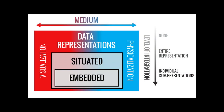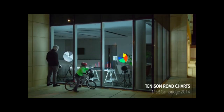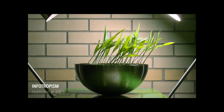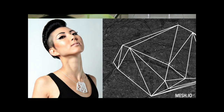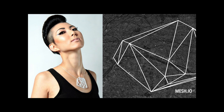There are also a number of examples of situated physicalizations. The Tennyson Road charts created by folks at MSR Cambridge use physical charts on a city street to show poll responses from residents in that neighborhood. David Holstius' infotropism work uses a set of lights positioned next to garbage and recycling bins — placing something into one of these bins illuminates one of the lights, and the growth of the plant visualizes people's use of those recycling bins over time. There are also interesting examples highlighting how the referent doesn't have to be a thing or a location — it could be a person. This travel pendant from mesh.io is situated by being placed next to the person who visited the locations it maps, providing additional personal and semantic meaning.